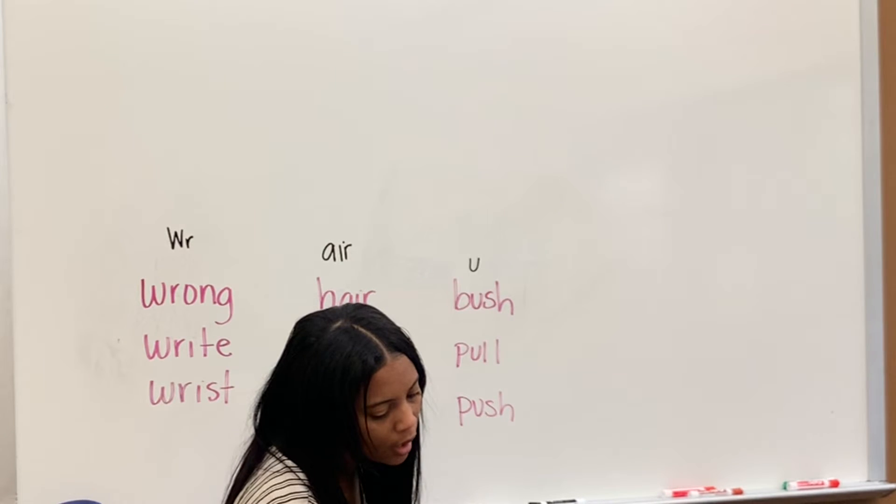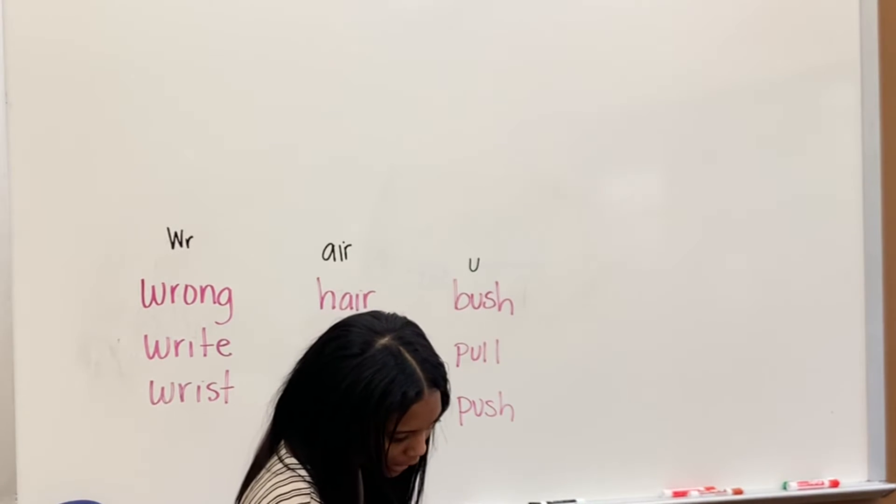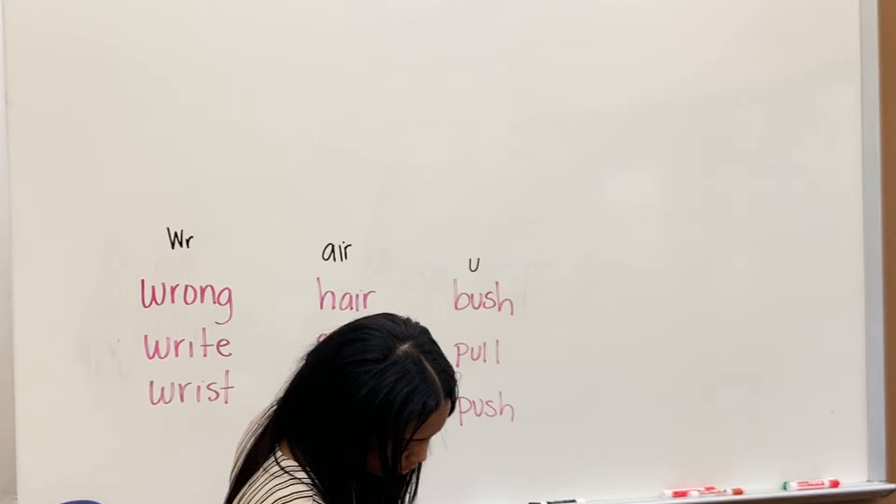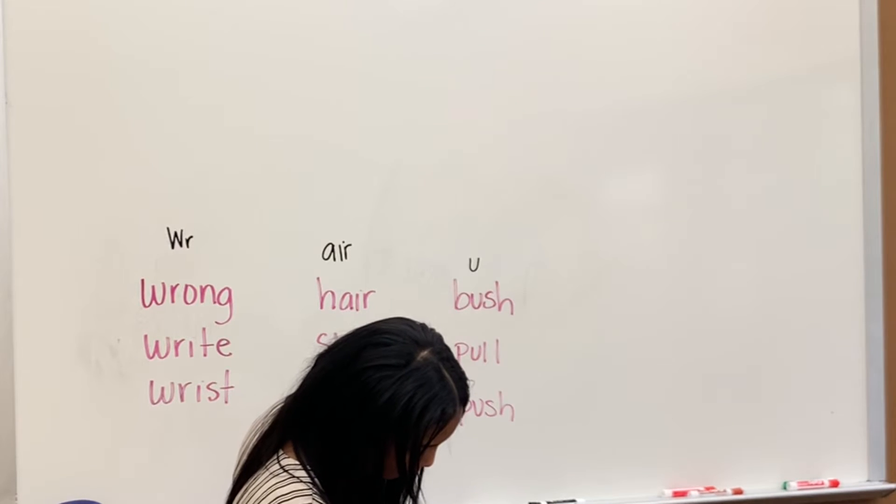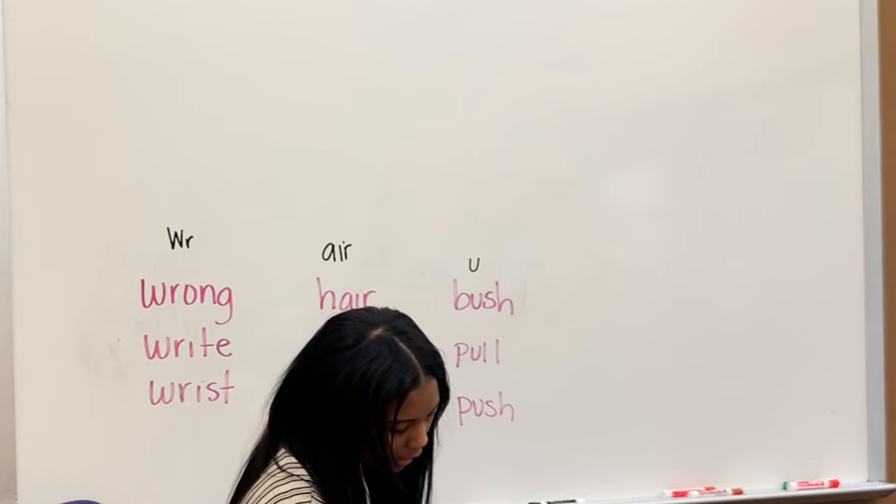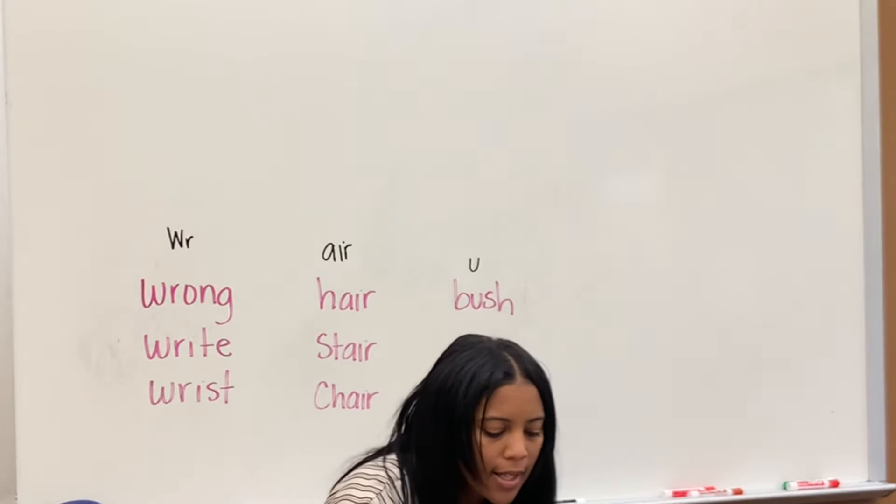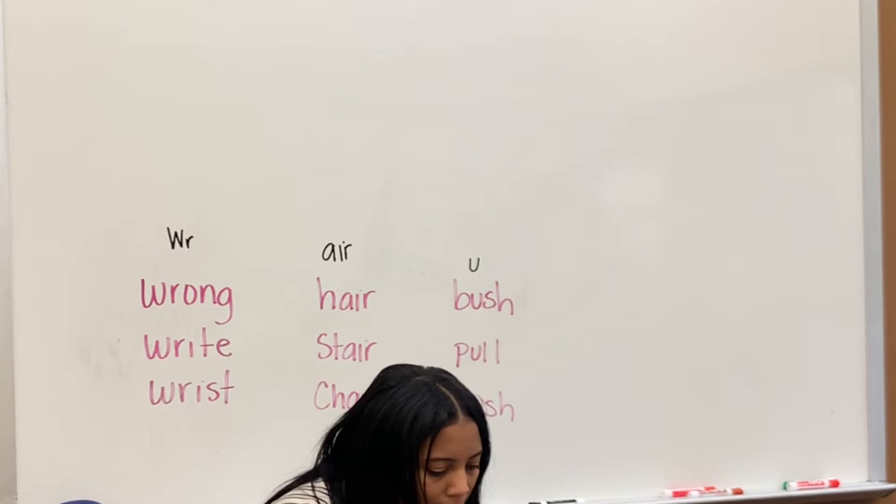OU says uh, uh, uh and country. Good. ARR says air, air, air and carry.